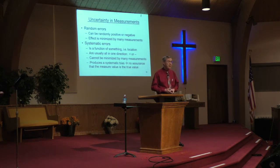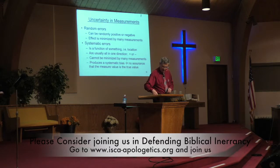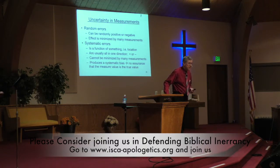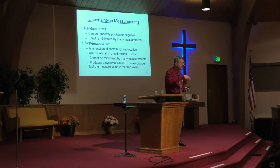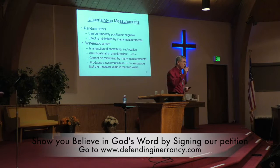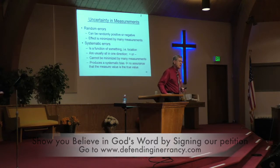There are two sources of errors in scientific measurements: random errors and systematic errors. Random errors can be a little bit high or a little bit low, and are easily dealt with by taking many measurements and averaging the result, because those that are high will cancel those that are low. On the carbon dating of the Shroud of Turin, they took 16 measurements by three different laboratories — three, five, and eight measurements respectively.